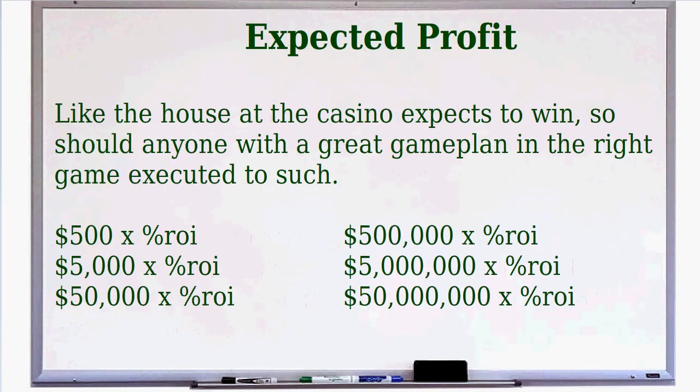Now let's talk about expected profit. Like the house at the casino expecting to win, so should anyone with a great game plan and the right game executed. For example, if you got a bankroll of $500 and you are playing with smart variance, you cannot do this trading Amazon and Google and the S&P 500 index because the trading fees would kill you — you cannot pay the rake.